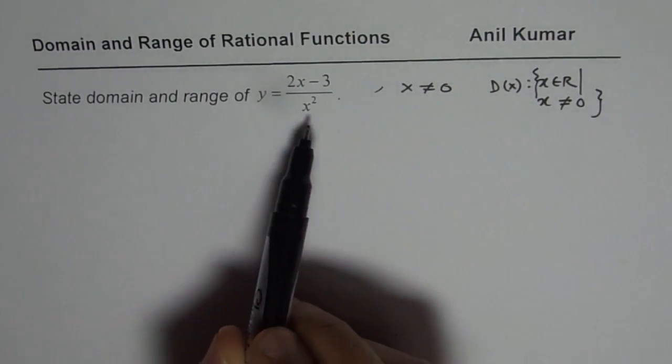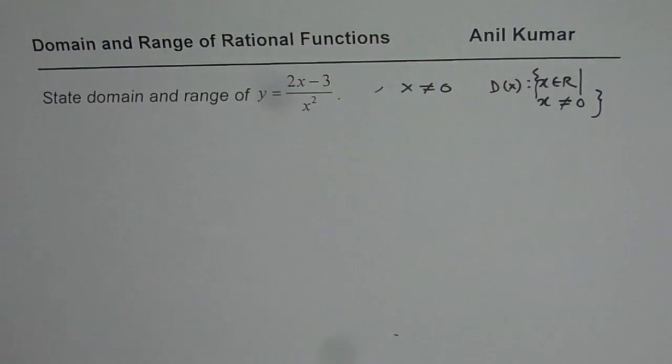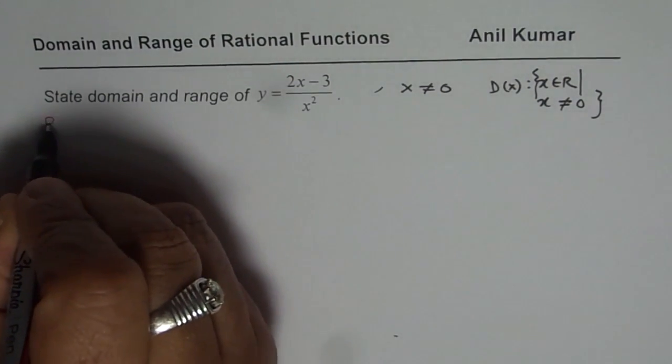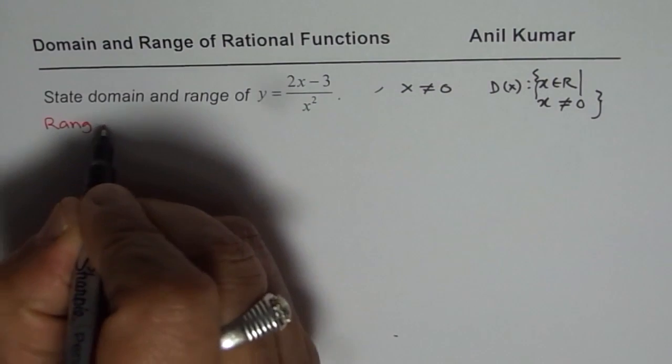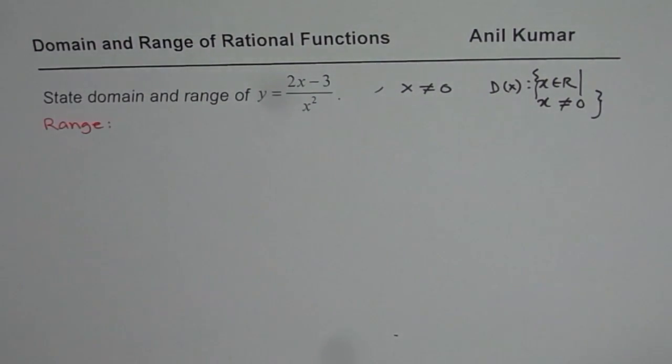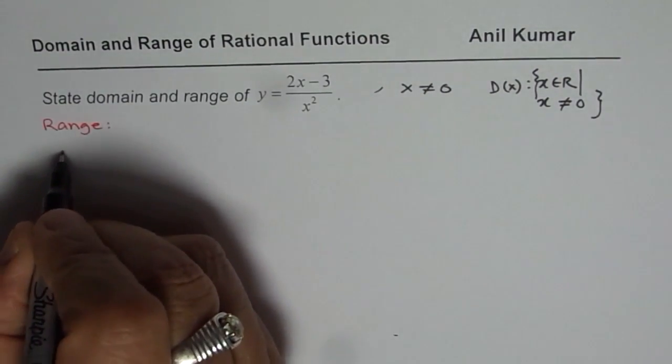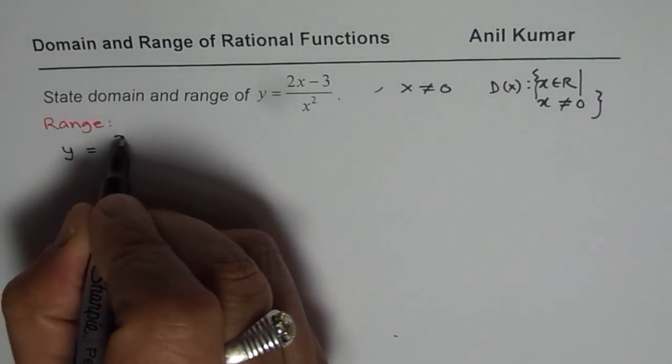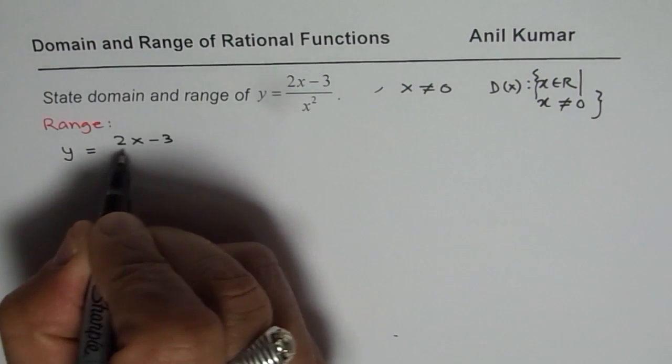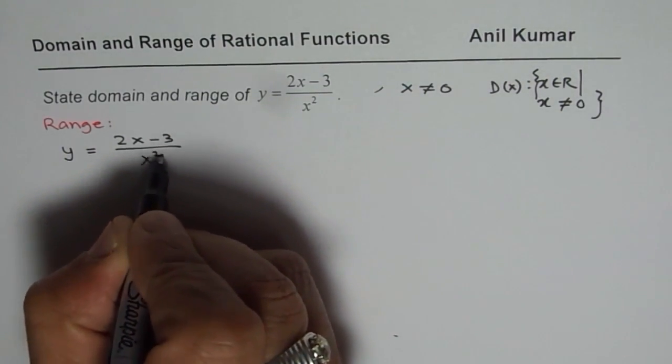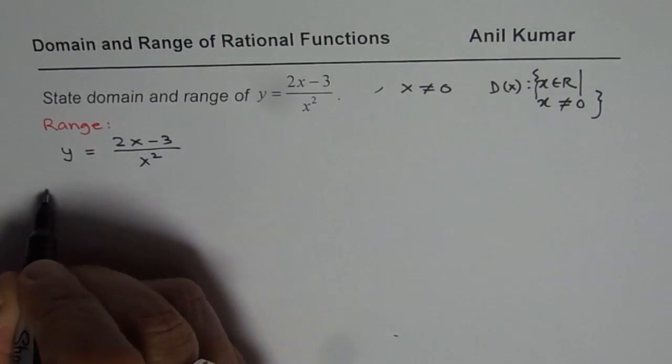Now we will see how to find the range for this particular function. That is a major exercise and the method here is very interesting. We have the function y equals 2x minus 3 over x squared. To find the range, let us cross multiply.